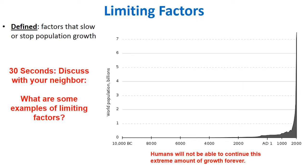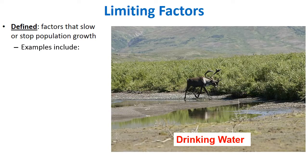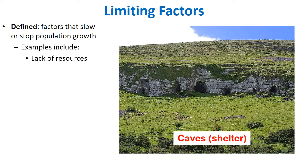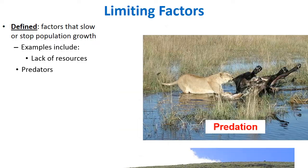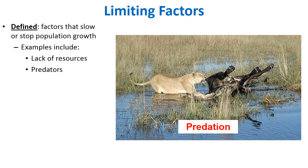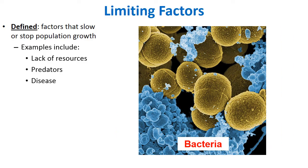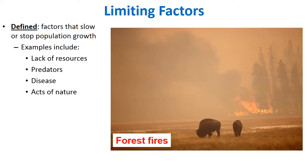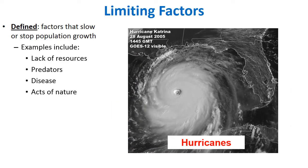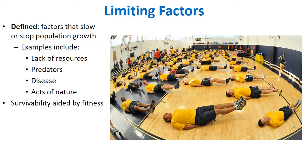Examples of limiting factors include a lack of resources such as drinking water, shelter, and food. Other examples are predators, disease — which becomes more common as populations grow — and acts of nature such as forest fires and hurricanes.